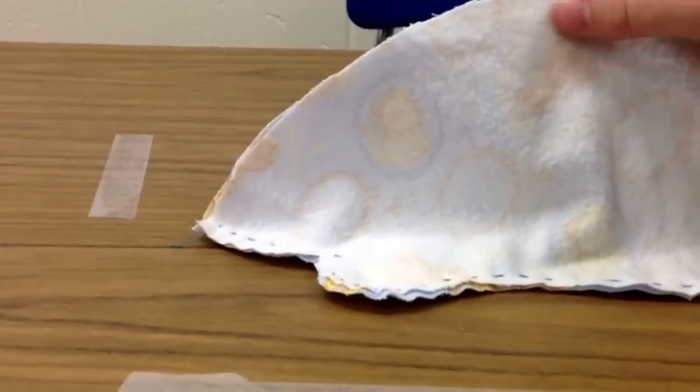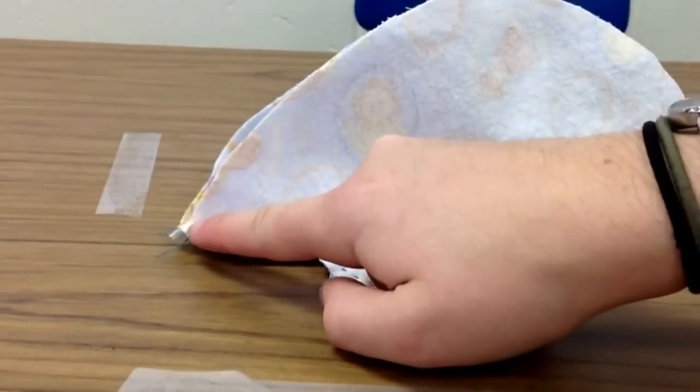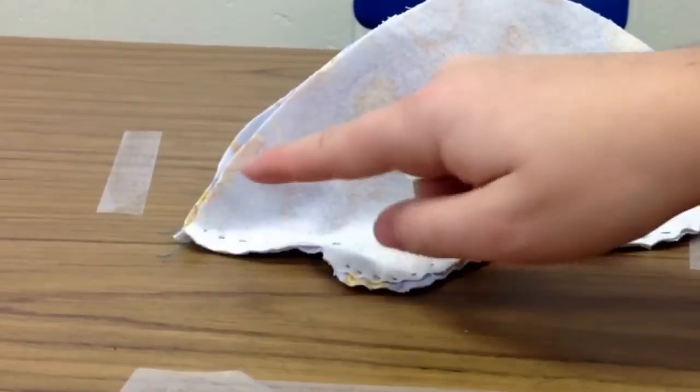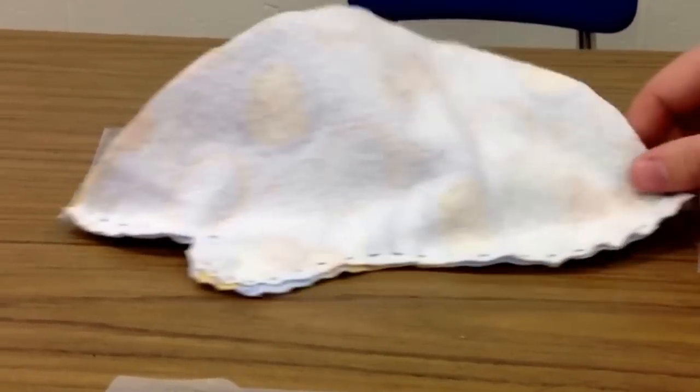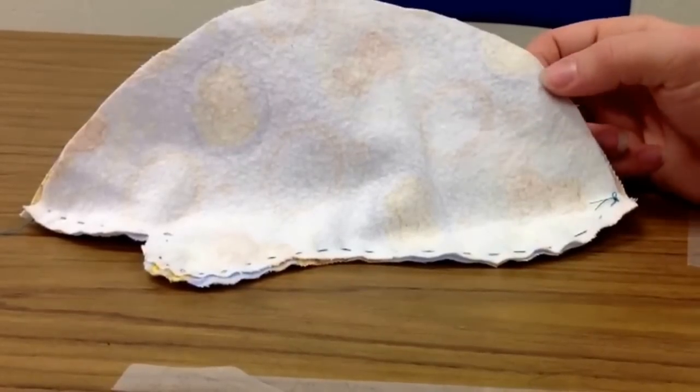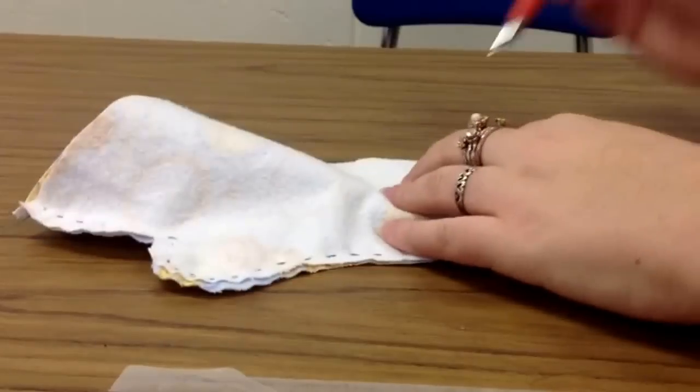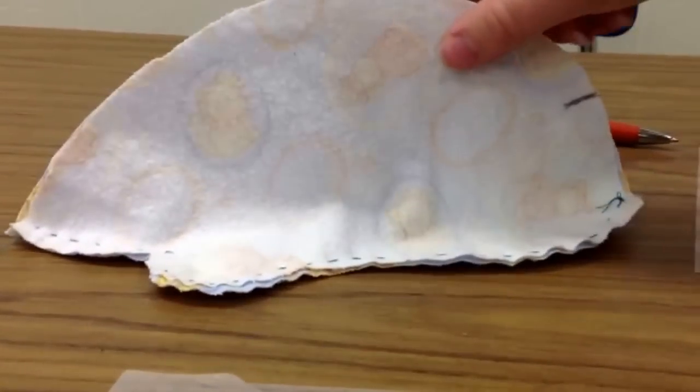So what we're going to do now is we're going to sew the top of the mold together. Starting at the front of the mold, start at the front of the mold. We are going to sew around the hump, around the back of the mold, but we are going to stop about right here. So we can mark that. We're going to stop sewing about right there and tie off our string.